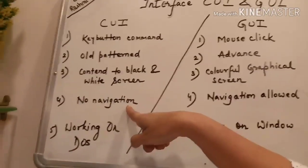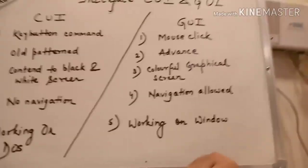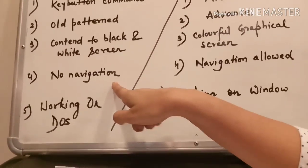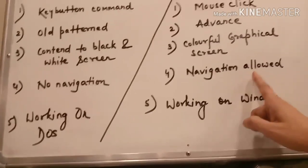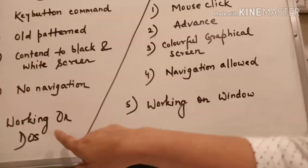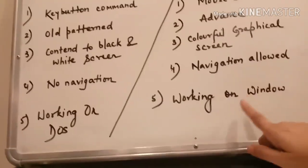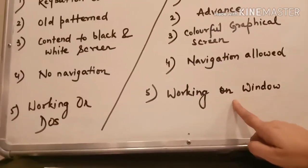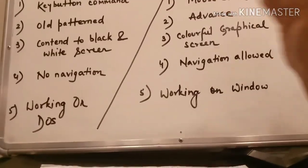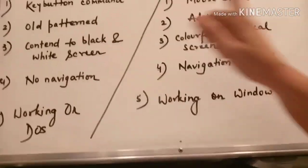CUI works only on DOS, Unix, and Linux — mostly on DOS. GUI works on all versions of Windows, as well as on Android phones and iOS. Ab clearly samajh mein aa gaya hoga ki CUI aur GUI mein kitna bada difference hai — and because of this, CUI is almost dead and only GUI is being used in the market today.